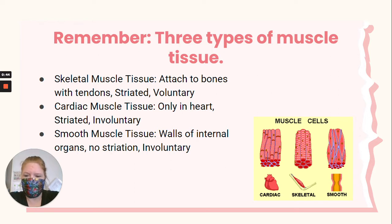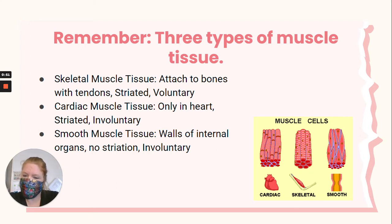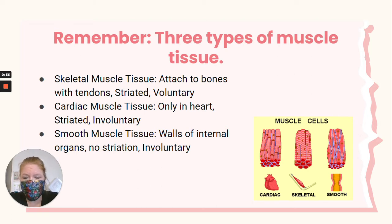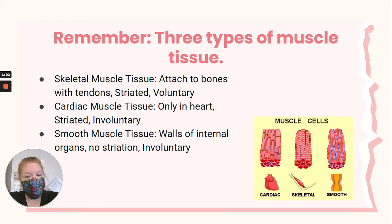But cardiac muscle is involuntary — and thank goodness, because if you had to think about whether or not your heart was beating, that would be terrible pressure. And then smooth muscle tissue lines the walls of your internal organs. It helps food move through your digestive system, as an example. Smooth muscle tissue has no striations and is also involuntary, meaning you do not control it.